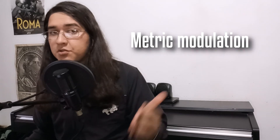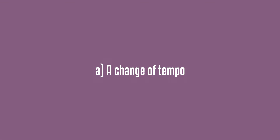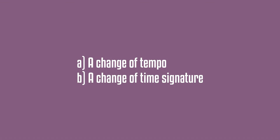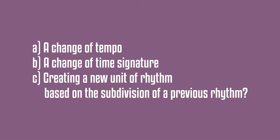Hi! What exactly is metric modulation? Is it a change of tempo, a change in time signature, or creating a new unit of rhythm based on the subdivision of a previous rhythm? If your answer was C, you're absolutely right! Interestingly enough, metric modulation can also imply the first and second concepts.